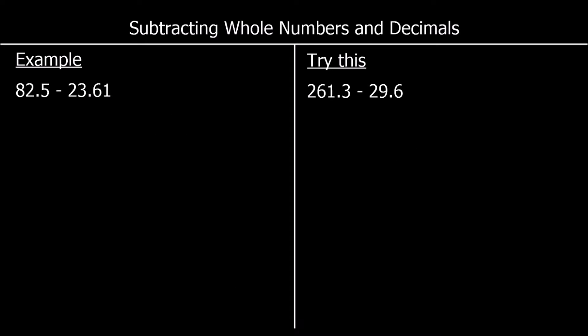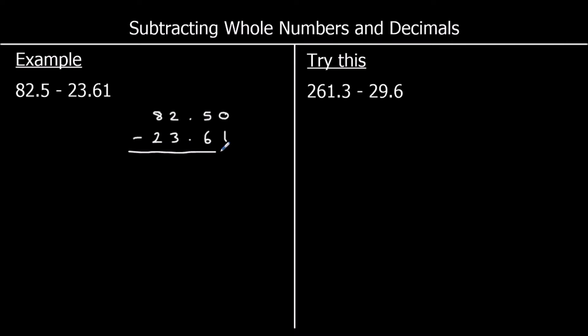Okay, so now we've got some decimals in the question, but we're going to follow the same method. The first question, I've got 82.5 take away 23.61. So I'm going to line up these numbers: 82.5 and 23.61. So tens with tens, ones with ones, tenths with tenths, and hundredths with hundredths. 82.5 has got nothing in the hundredths column, so I'm going to add a zero. Now we're ready to take away.